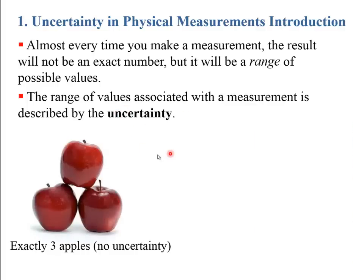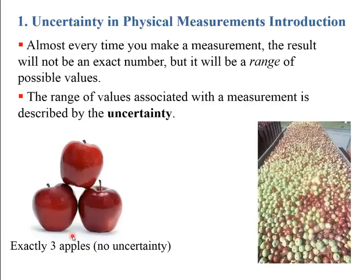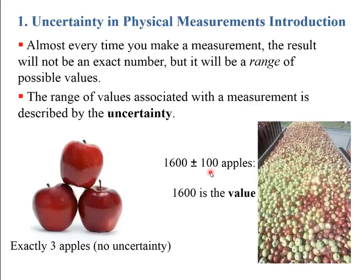An exception to that rule would be if you have a pile of three apples — that's three, and there is no uncertainty on three; it's just three plus or minus zero. However, if you have a truck filled with apples and you say there's 1,600 apples in the back by estimating based on the volume of the truck and the volume of an apple, that number 1,600 will have an uncertainty — say, 100, depending on how carefully you counted. So 1,600 is the value and 100 is the uncertainty.